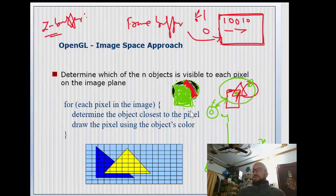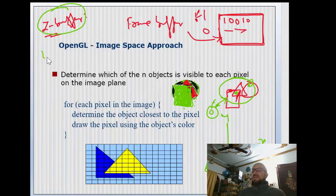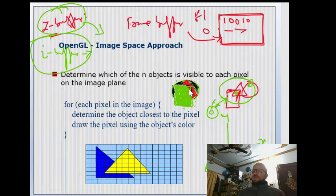If we draw pixels multiple times — for the circle, then the triangle, then the rectangle overlapping — it will waste a lot of CPU cycles. So instead we should do all the comparison in memory, in the Z-buffer, and also in the intensity buffer which stores the pixel color at each location.